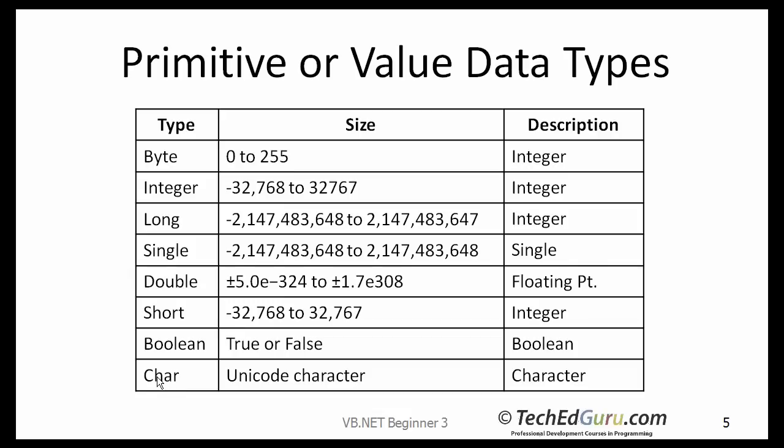Why different data types? We need different data types to write efficient programs. For example, integer arithmetic is faster than floating point type. Also, the memory required by one type may be less than the other.